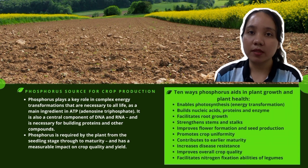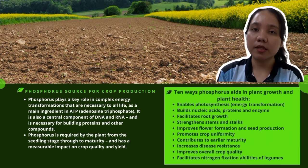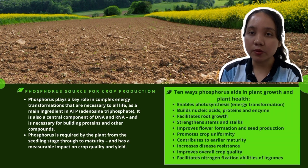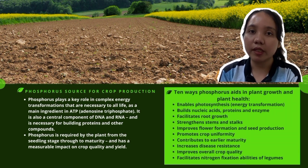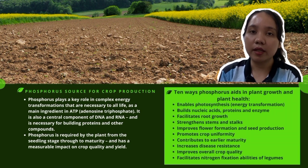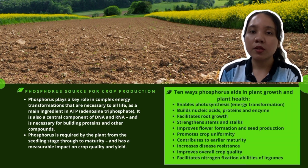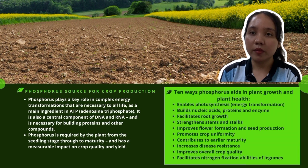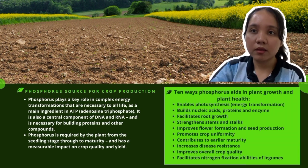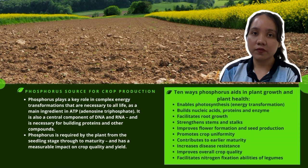Phosphorus plays a key role in crop production and complex energy transformations necessary to all life, as a main ingredient in ATP. It is also a central component of DNA and RNA and is necessary for building proteins and other compounds. Phosphorus is required by plants from the seedling stage through to maturity and has a measurable impact on crop quality and yield.